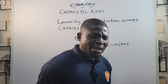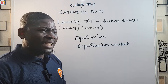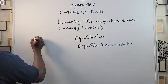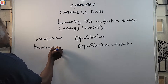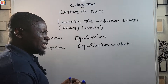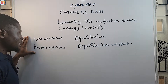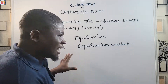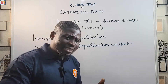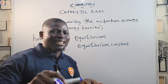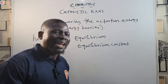Depending on the physical state of the catalyst, a catalytic reaction may be homogeneous or heterogeneous. A catalytic reaction is said to be homogeneous when the reactants, products, and the catalyst are all in the same physical state. It is said to be heterogeneous when the reactants, products, and the catalyst are in different physical states.